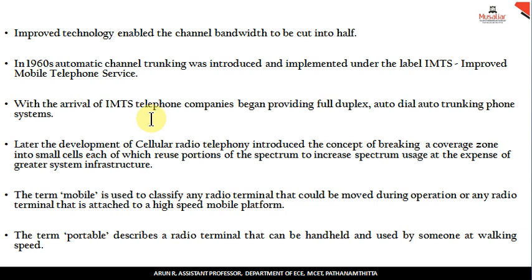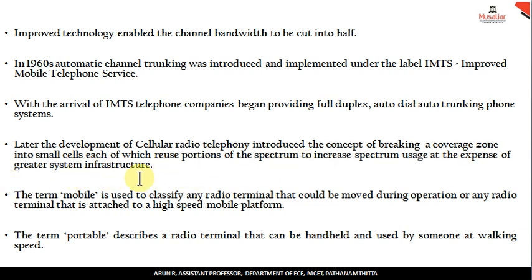After IMTS, the development of cellular telephony began. 'Cellular' means breaking the entire coverage area into smaller cells or smaller areas, each known as a cell. This type of communication is known as cellular radio, which reuses portions of the spectrum — increasing spectrum reuse at the expense of greater system infrastructure, meaning different cells can use the same frequency spectrum as long as they are a sufficient distance apart.